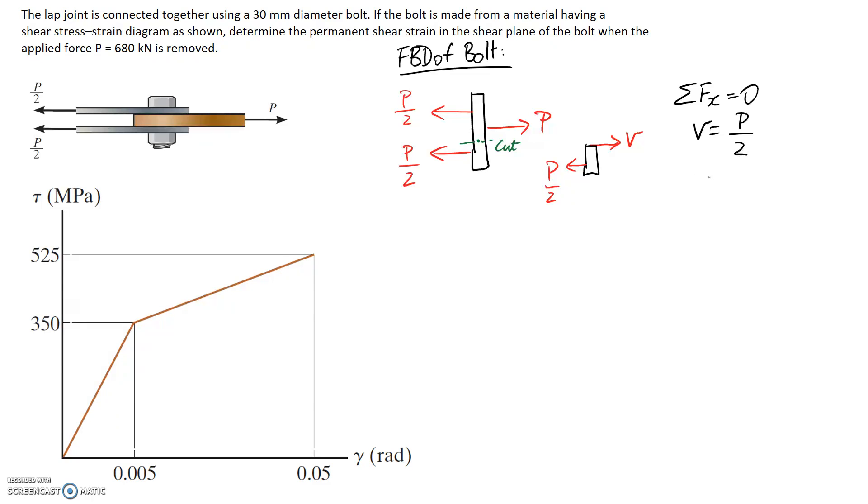We can work out this as a number because we're told that P is equal to 680 kN, so dividing this by 2 we end up with a shear force of 340 kN through our bolt.